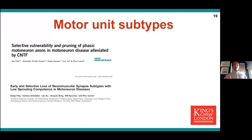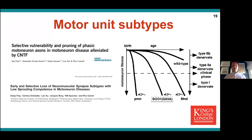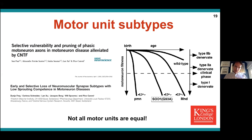We know motor units have subtypes, and in mouse models of ALS two papers have really stood out showing selective vulnerability of motor unit subtypes on the faster end of the spectrum. The thought is that they are more energy demanding and therefore succumb to the disease more quickly. The take-home message is that not all motor units are equal, and I think there is a lot of work that can be done on motor unit number estimate techniques through high density surface EMG to tease out this further.